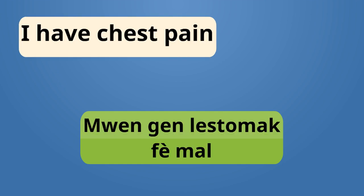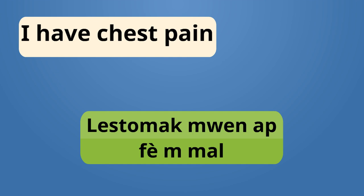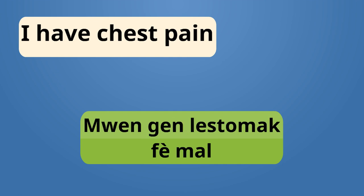Let's say something's hurting you — in this case, your chest. You have chest pain. Mwen gen le stomak fè mal. Mwen gen le stomak fè mal. 'Fè mal' is like something's hurting. Another way to say your chest is hurting, or you have chest pain, is to say: le stomak mwen ap fè mal. My chest is hurting me. Si le stomak nou ap fè nou mal, nou gen doulè na le stomak nou, nou gen, nou a di: I have chest pain.